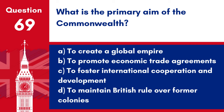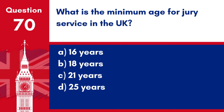Question 69. What is the primary aim of the Commonwealth? a. To create a global empire. b. To promote economic trade agreements. c. To foster international cooperation and development. d. To maintain British rule over former colonies. Answer: c. To foster international cooperation and development. The Commonwealth aims to support member countries in development goals, democracy and peace.